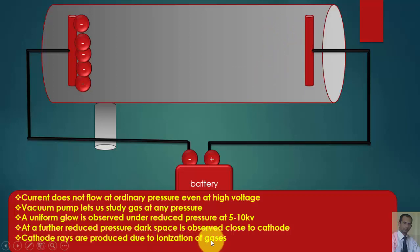Cathode rays are produced due to the ionization of gases inside this tube. But it must be in your mind that cathode rays can also be produced through thermionic emission if you heat up this cathode. Then electrons can be emitted from this cathode as well.